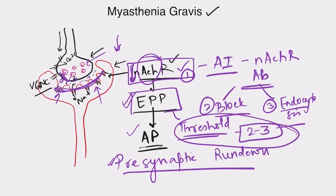That safety factor does not apply in myasthenia gravis. In the morning, when acetylcholine released is high, EPP may reach threshold and an action potential is generated. But as the day passes and physiological pre-synaptic rundown occurs, less acetylcholine is released and fewer receptors are available. EPP cannot reach the threshold, and action potential may not be generated. This is the pathophysiological basis of myasthenia gravis.